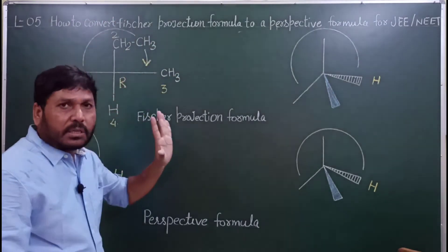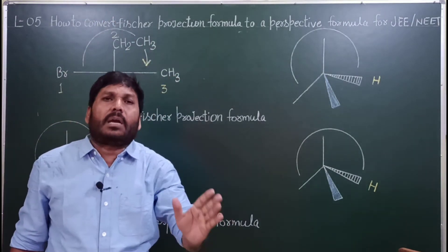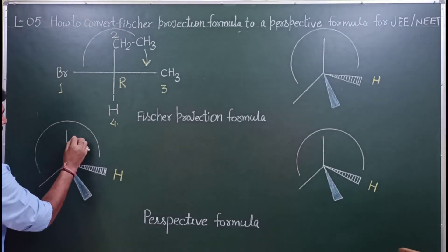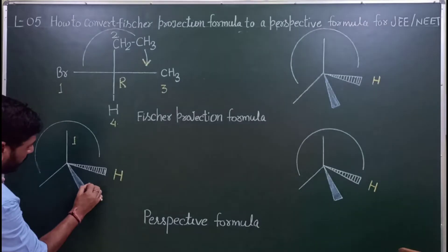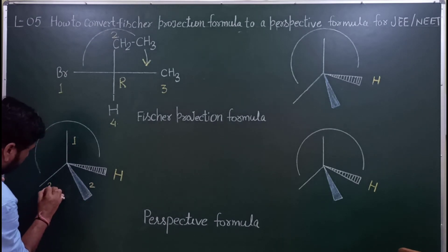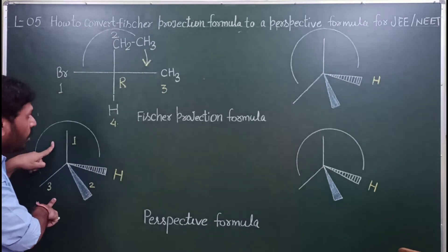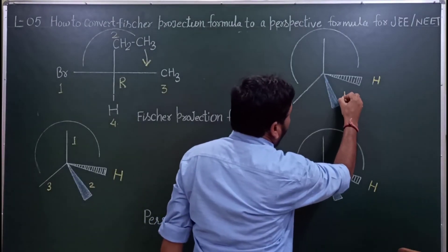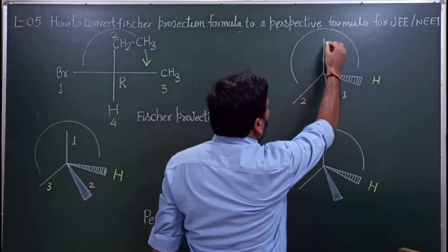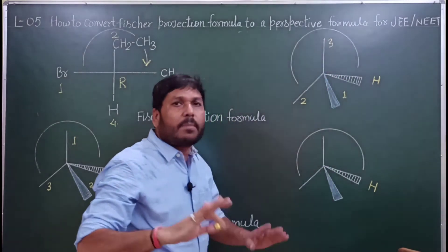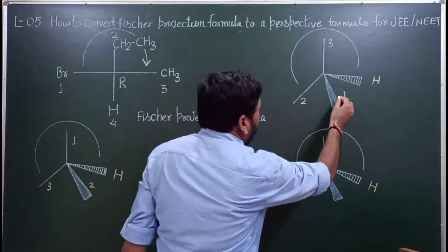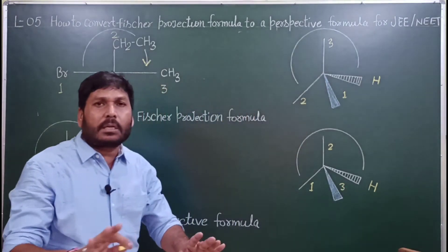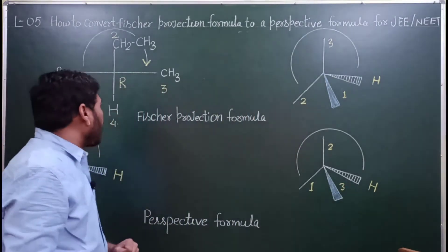अब आपके पास ये 3 groups हैं: BR, C₂H₅ और CH₃। इन्हें कहीं भी रखिये लेकिन एक तरीका बताता हूँ — आप number डाल दीजे। इसको number one मान लीजे, इसको number two, और इसको number three। तीन conditions हो सकती हैं। Solid wedge पर इस तरीके से तीन number आपने डाले। अब highest priority order को — यानि number one — कहीं भी रखिये।